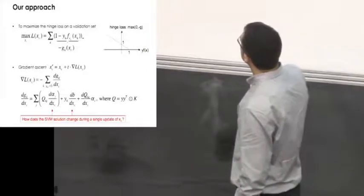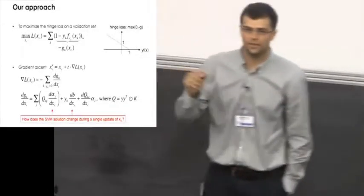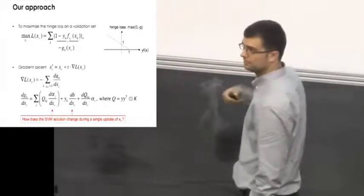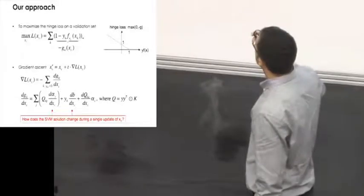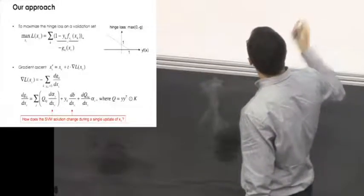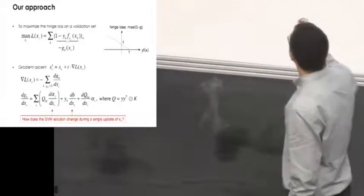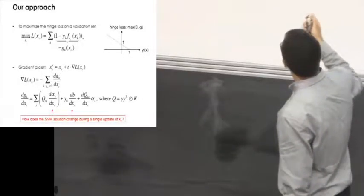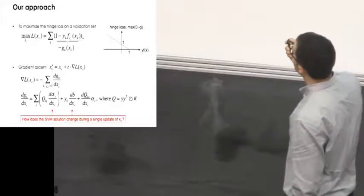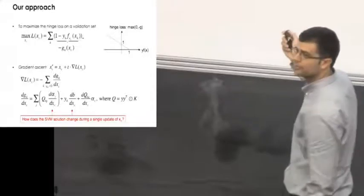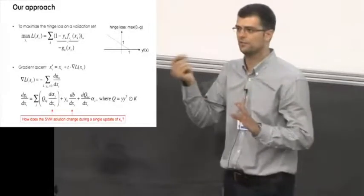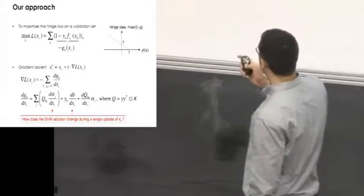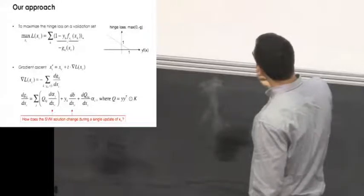We start from an initial attack point xc and we iteratively modify the attack point by taking small steps in the gradient direction. What we require to compute here is the gradient of this loss function. Since the loss function is not differentiable at this point, we just consider the points in the validation data that give a positive contribution to the hinge loss, and then we can just take the derivatives of this g function, which is called the margin condition. It's the label of the given point xk in the validation data times f of xk, which is the discriminant function of the SVM, so basically the distance of xk to the decision hyperplane, minus 1. If we take the derivative of this function here, we've got this expression.